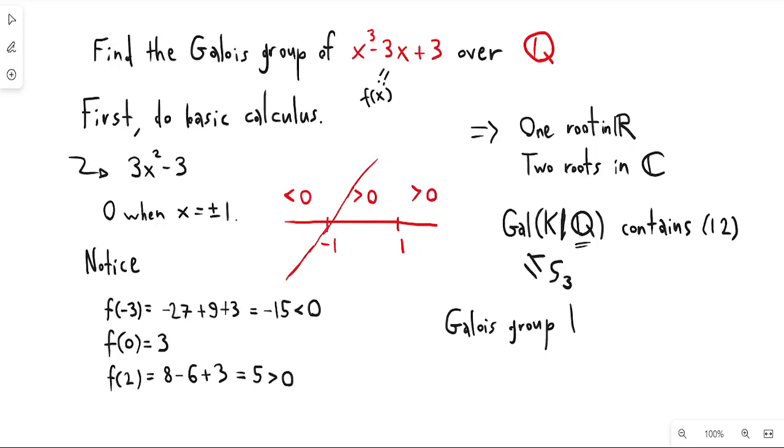I know that the Galois group is transitive. Being transitive just means that there's at least one element of the Galois group that is an n-cycle, so in this case a 3-cycle. And I know that because my polynomial is irreducible.